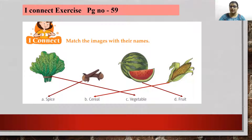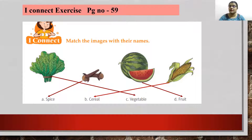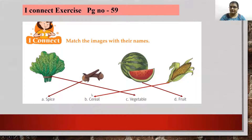Four images are given. We have to correctly match them with their names. For the first one, you will match it with C, because C option is the correct one — this is a vegetable. Second is clove and it is considered as a spice, so you will match it with spice. Third one is watermelon and watermelon is a fruit.